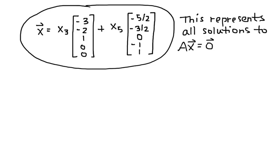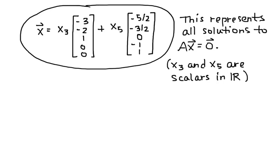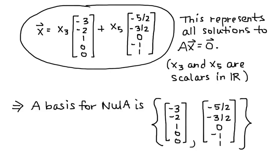This represents all solutions to AX equals zero. Since X3 and X5 are scalars, a basis for the null space of A is the set containing the two vectors: (negative 3, negative 2, 1, 0, 0) and (negative 5/2, negative 3/2, 0, negative 1, 1). When writing the basis, we do not write the scalars, because a basis is the set of vectors that spans our space — it is understood that every element of the space is a linear combination of those two vectors.